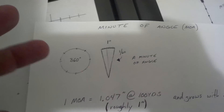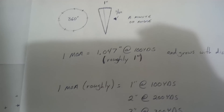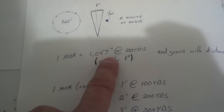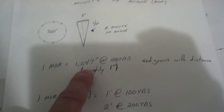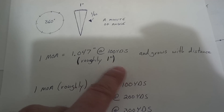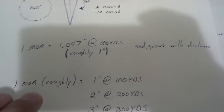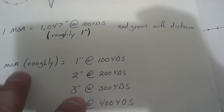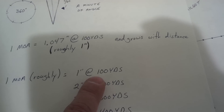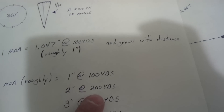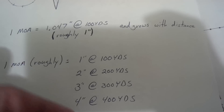What does that mean to you as the shooter? Nothing — you can't really use that information, so let's not sweat that. A minute of angle equals 1.047 inches. This is an important number — you should write this down. Or roughly one inch at 100 yards, and it grows with distance. One minute of angle is one inch at 100 yards, two inches at 200 yards, three inches at 300 yards, and so on.